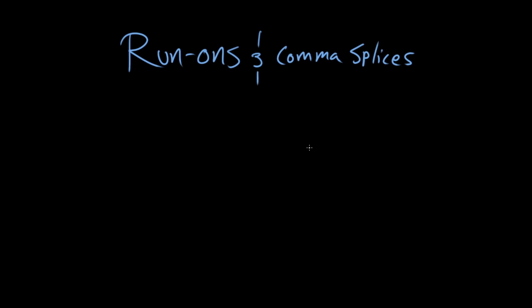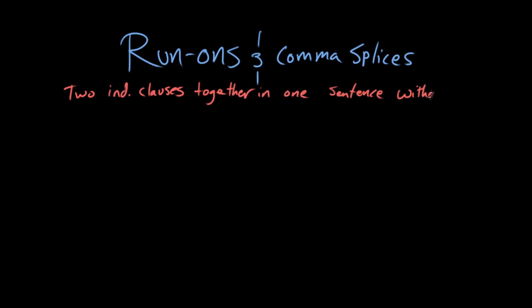A run-on sentence is what happens when two independent clauses are put together in one sentence without any punctuation or coordinating conjunctions like and, but, and or.